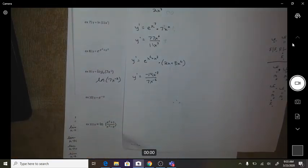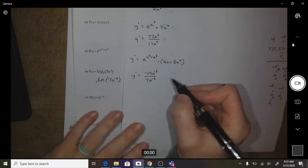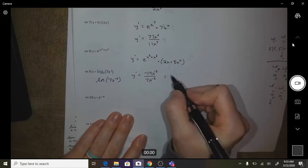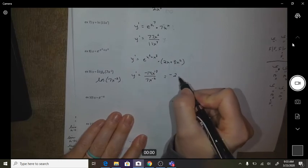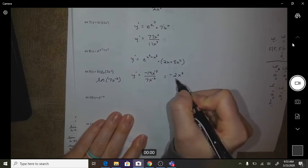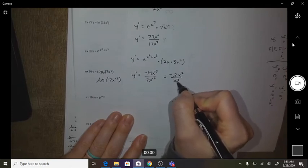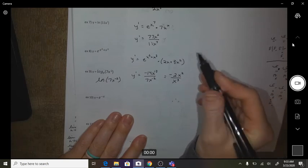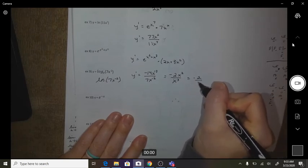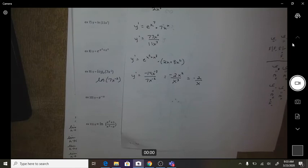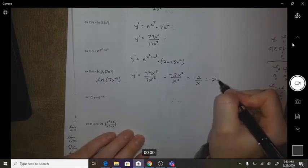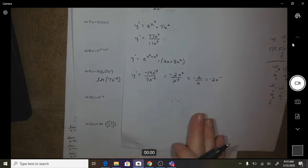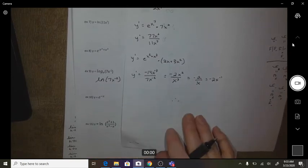Again, you can simplify that if you kept going here. Obviously, negative 14 divided by negative 7 is negative 2. You can move that to the top and move that to the bottom as positive exponents. You could also simplify this and have negative 2 over x, or negative 2x to the negative 1, right? I would not ask you to do that, but obviously you can see where that all comes from.